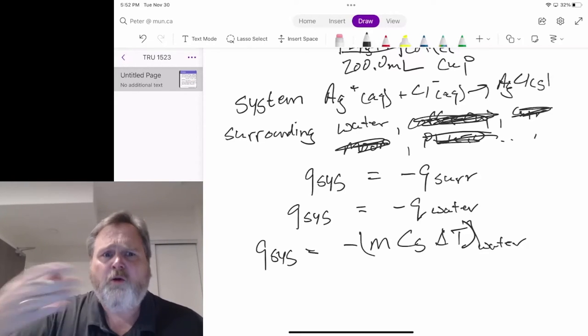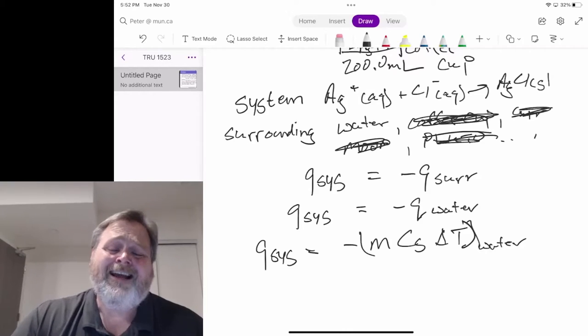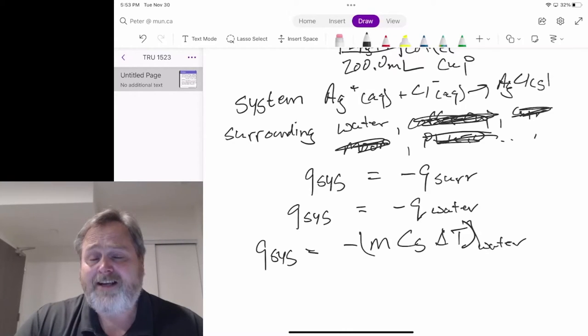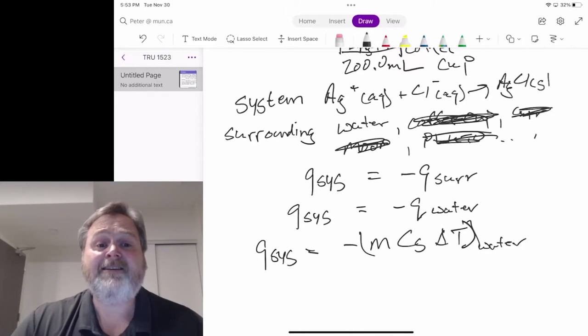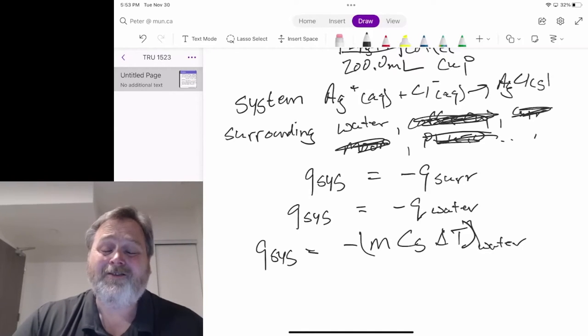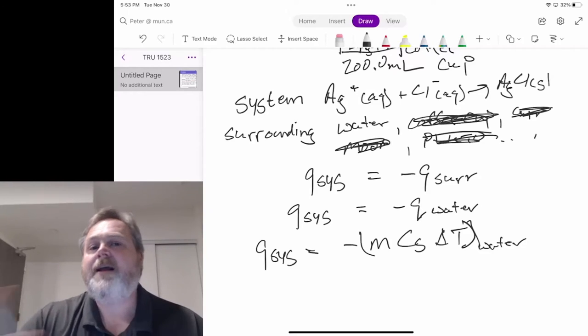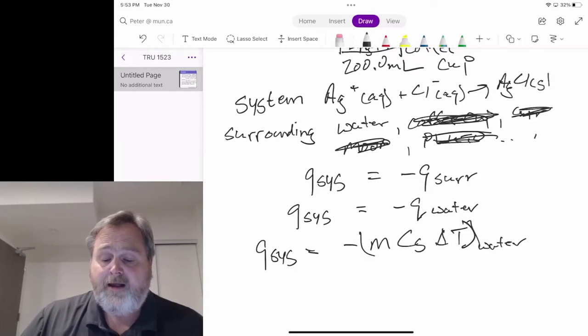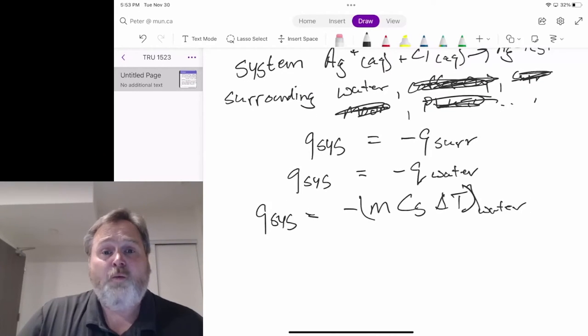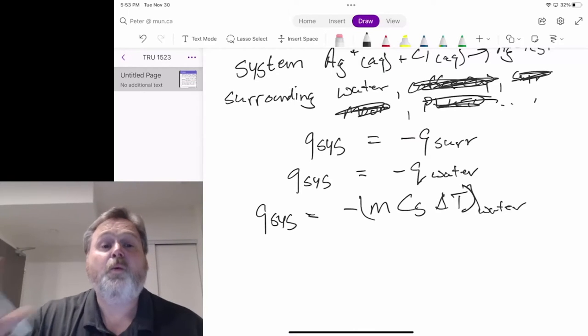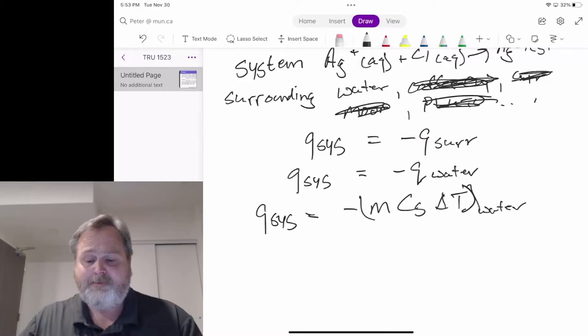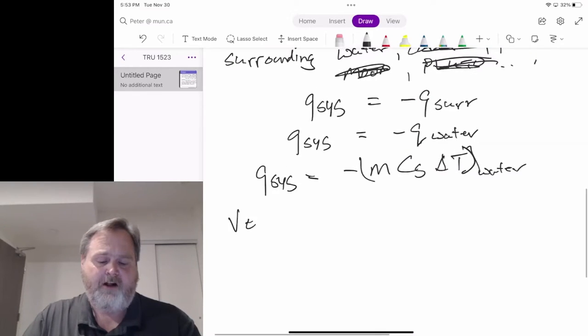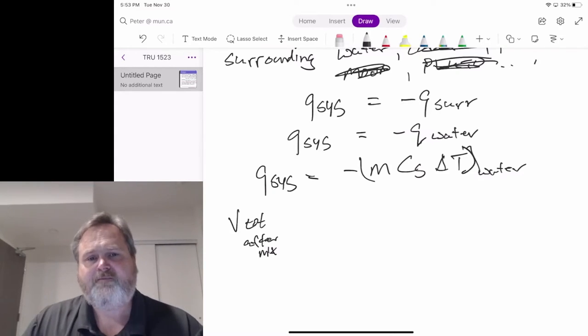You can imagine if I start putting more and more stuff dissolved in water, that density is going to change and the heat capacity is going to change because heat capacity ties back to the kinds of motion that are allowed. If I've got stuff other than water, that's going to change how I can store heat, that's going to change the heat capacity. But we're assuming those don't matter in the context of our experiment. If I wanted to be more exact and precise, I would have to account for that. In this course, we don't need to.